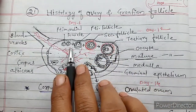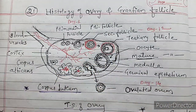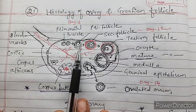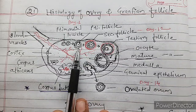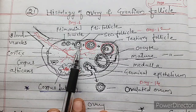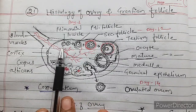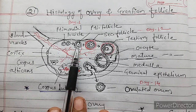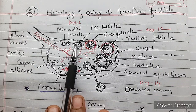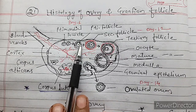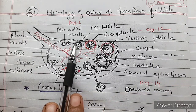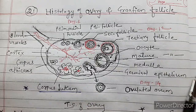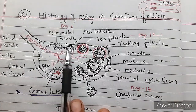What is the difference between primordial and primary follicles? The difference is only that the primordial follicle is single layered, whereas the primary follicles are multilayered. So a multilayered structure is present in the primary follicle.